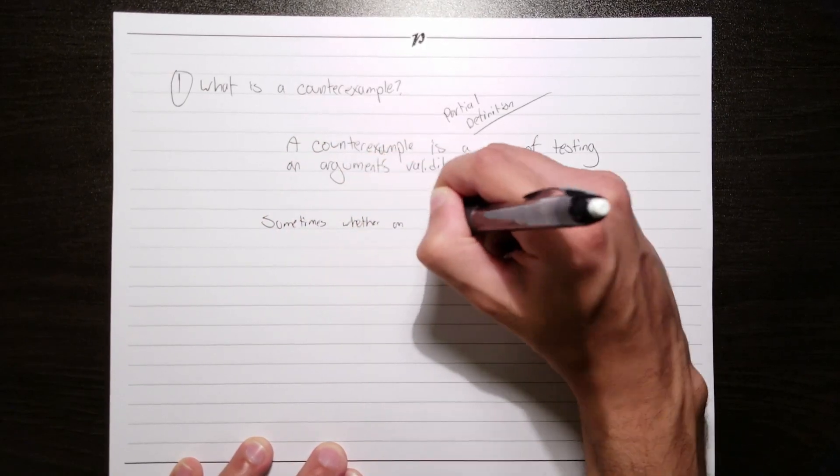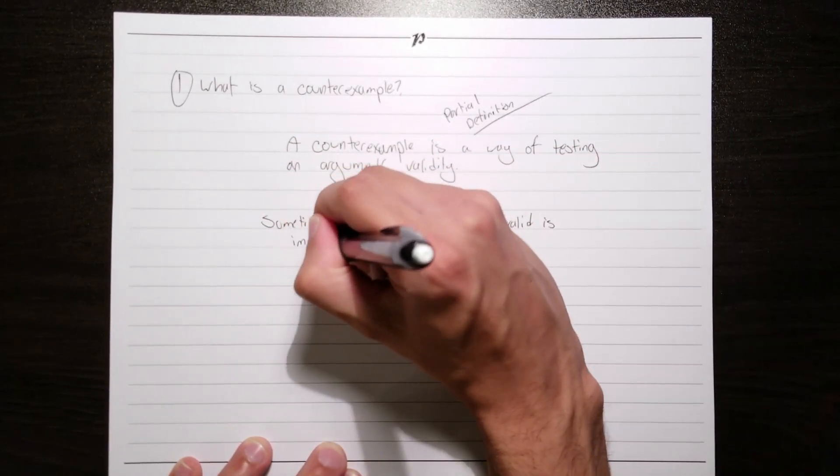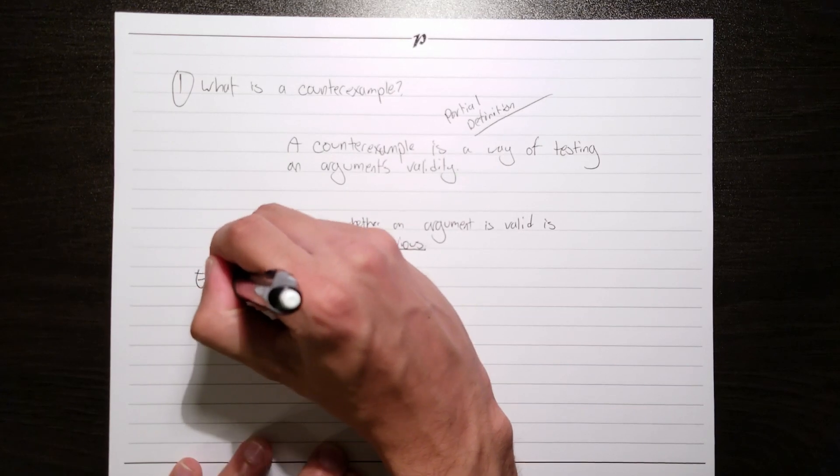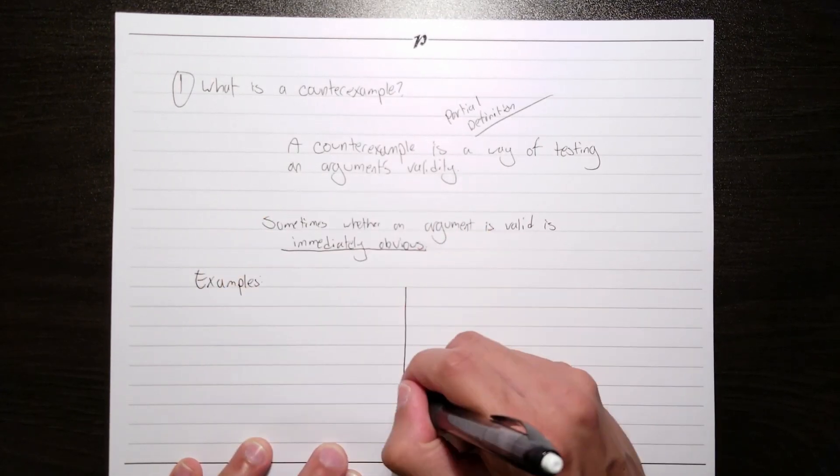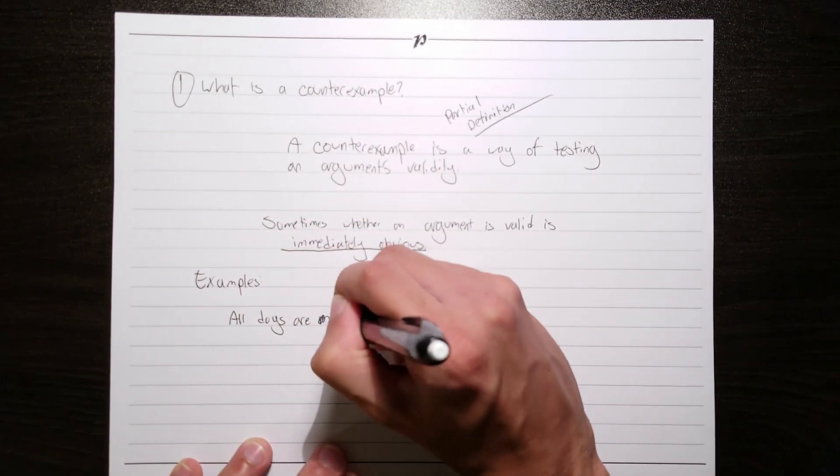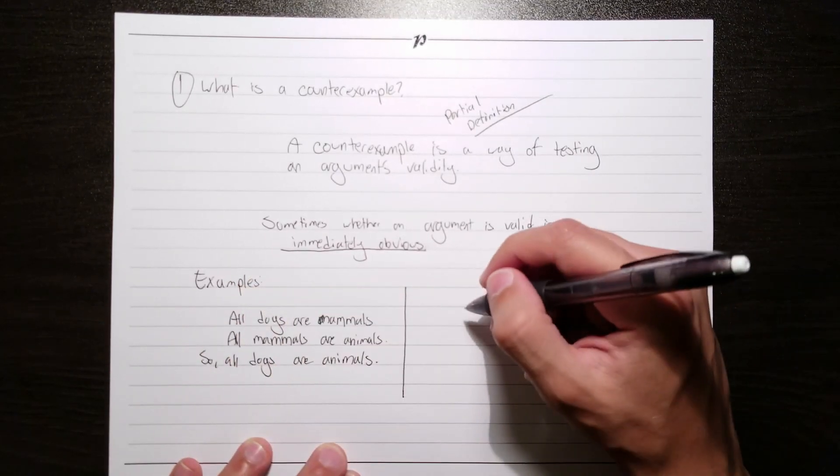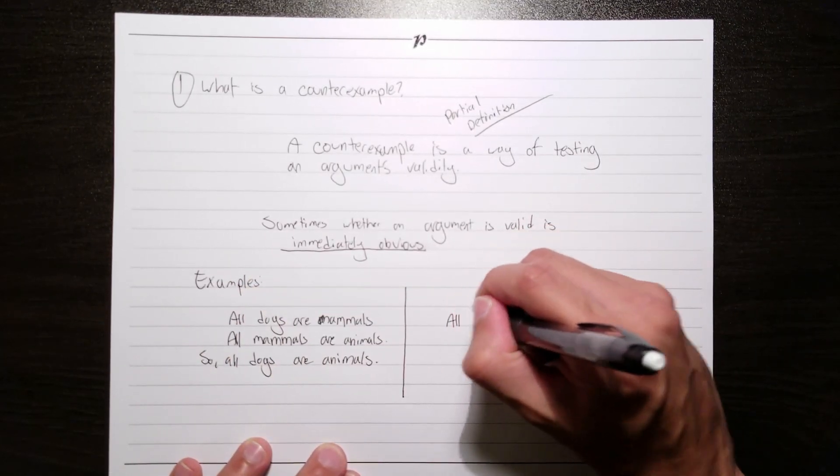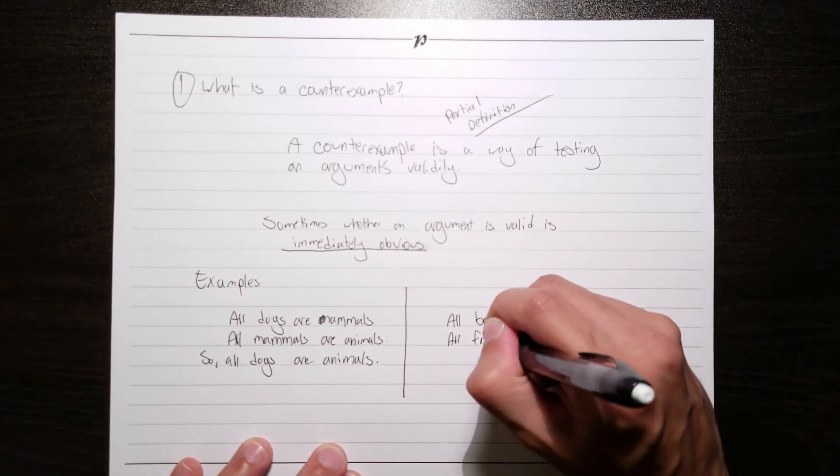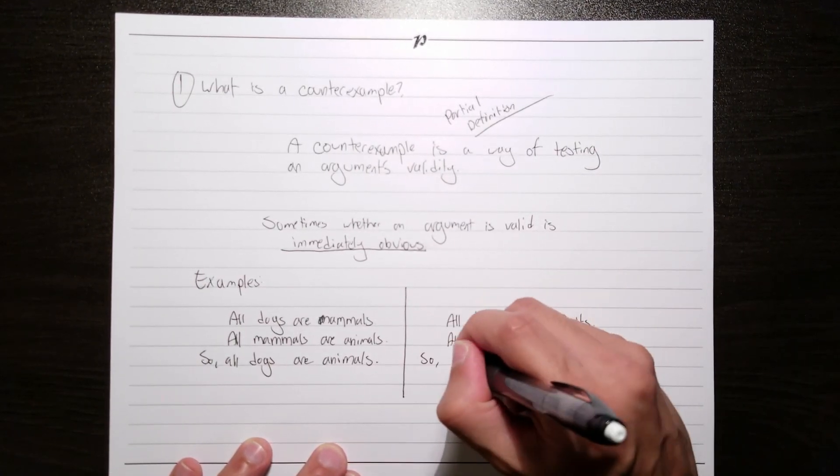Sometimes whether an argument is valid is immediately obvious. For instance, consider this never-before-seen argument. All dogs are mammals, all mammals are animals, so all dogs are animals. You might also have an argument that says something like, all bananas are fruits, all fruits are food, so all cats are lions.